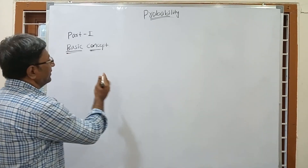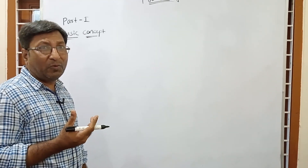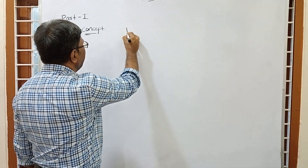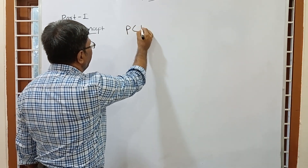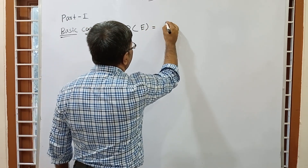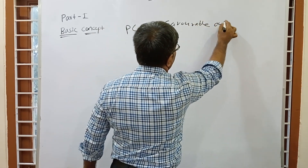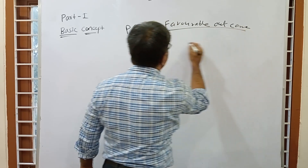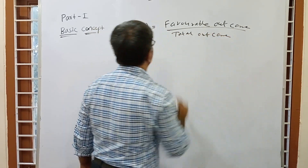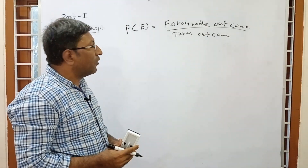This is the basic concept of probability. The probability of any event is: favorable outcome divided by total outcome. The question arises — what is favorable outcome and what is total outcome?